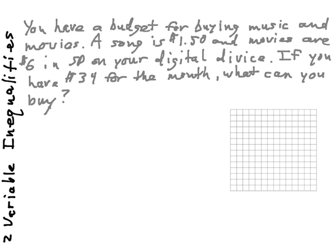You have a budget for buying music and movies on your digital device, your iPad, your tablet PC, your cell phone. A song is $1.50 and movies are $6 in SD. It uses less memory space that way. If you have a $34 budget for the month, what can you buy? Well, this type of equation or this type of situation is going to lend itself nicely to a standard form.